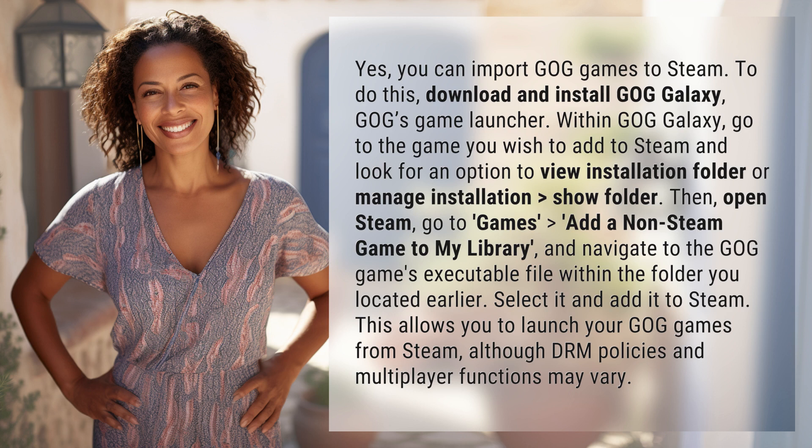Then, open Steam, go to Games > Add a Non-Steam Game to My Library, and navigate to the GOG game's executable file within the folder you located earlier. Select it and add it to Steam.